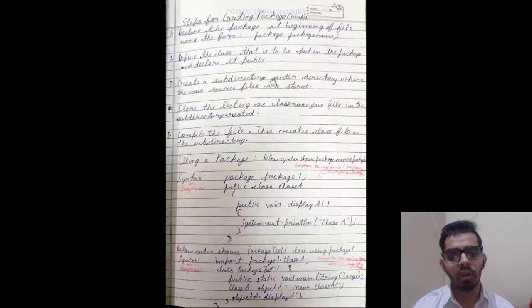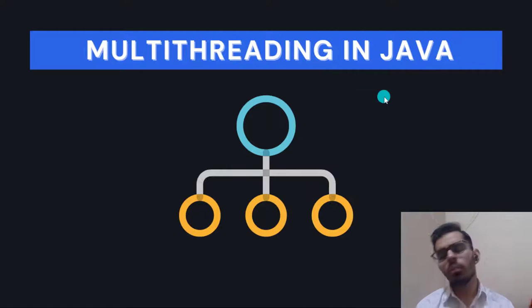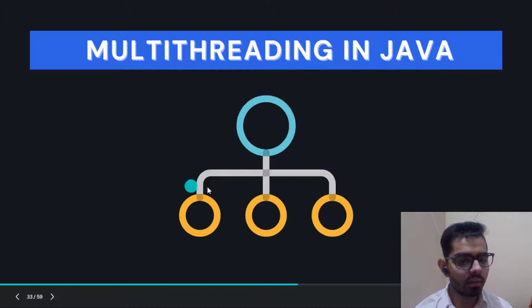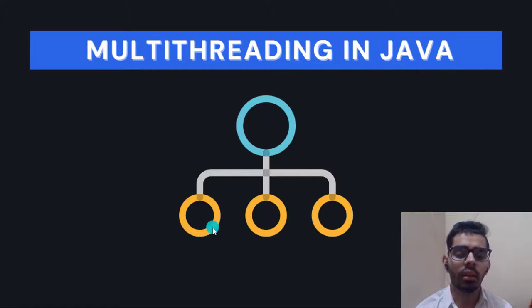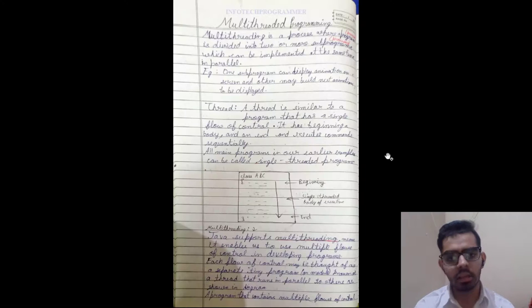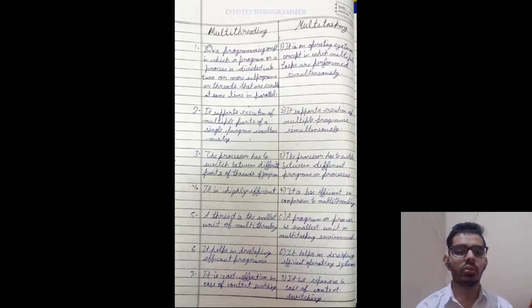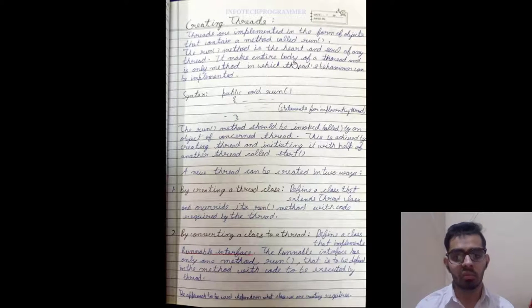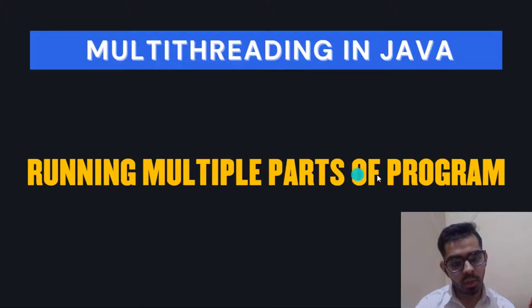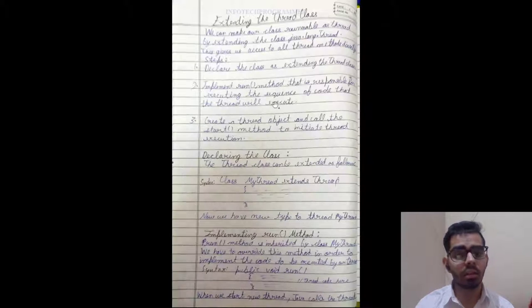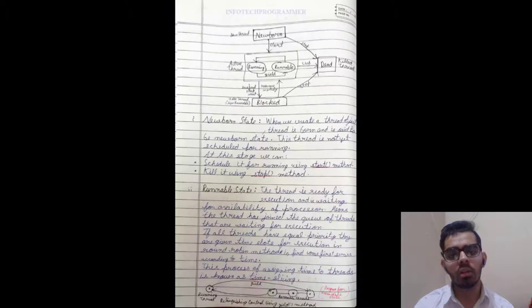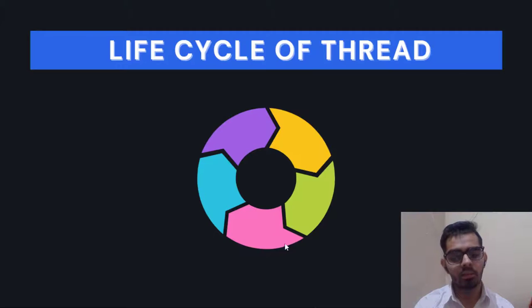After packages, we have multi-threading in Java. Multi-threading means dividing our program into different parts called threads and running them simultaneously. I've explained multi-threading with diagrams, the difference between multi-threading and multitasking, how to create threads, how to run multiple parts of a program, extending the Thread class, and various thread states like stopping and blocking.